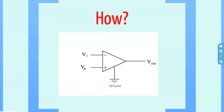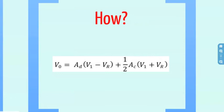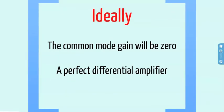This is a simple diagram of a differential amplifier, where V1 is the input electrode, Vr is the reference electrode, ground is the ground electrode, and Vout is the output of the differential amplifier. This is the differential amplifier equation, where V0, V1, and Vr are as just described. Ad is the differential gain and Ac is the common mode gain. Ideally, Ac — the common mode gain — will be zero, meaning almost no noise is present in the output V0. This would be a perfect differential amplifier. However, this is very rarely the case.